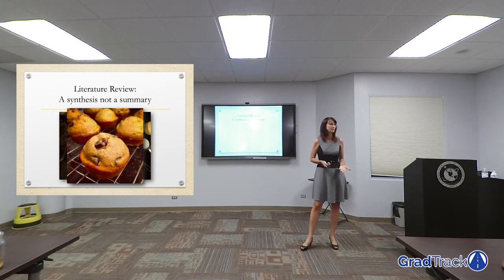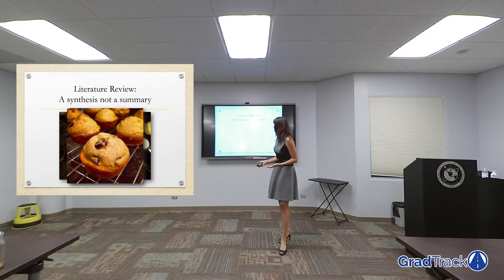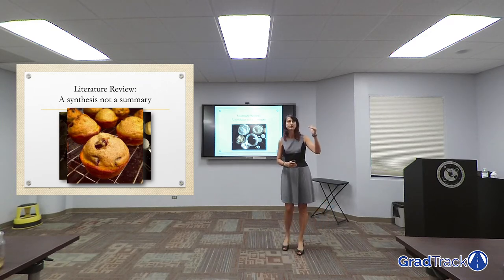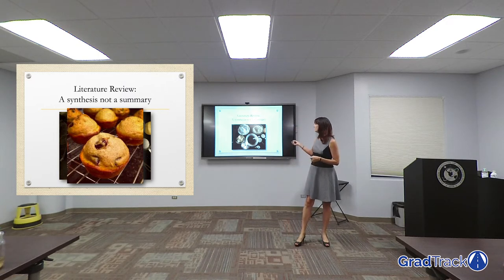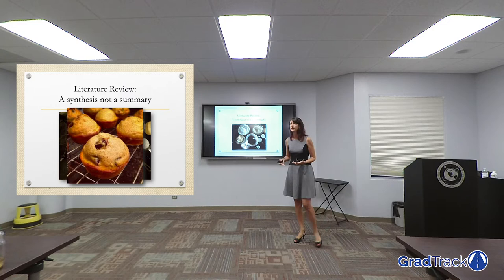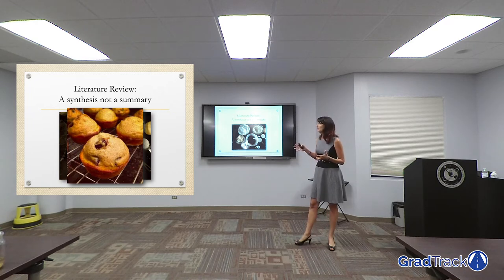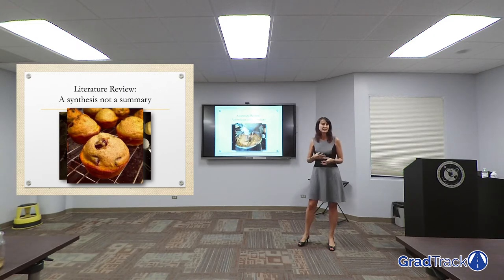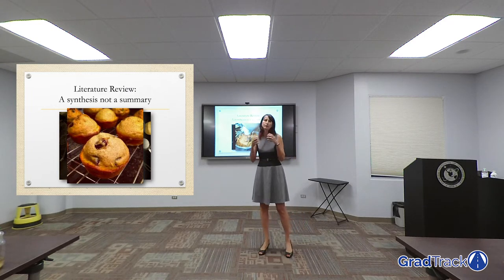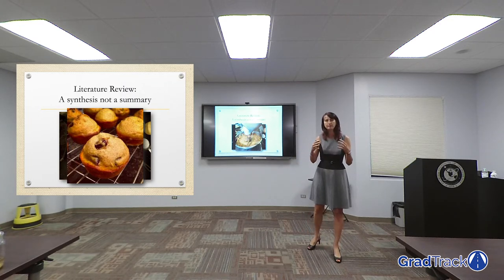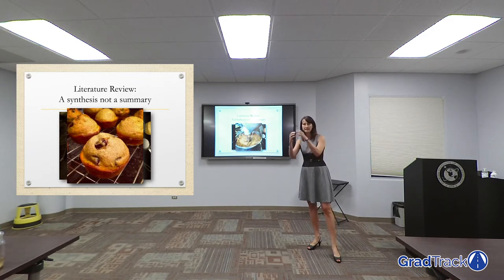If we think about a literature review like a recipe and like baking, we can have our ingredients. The literature that you have — your references — is your list of ingredients. But a list of ingredients is not creating a muffin. You've got to start putting those things together. The literature review, ultimately, is that mixing of things together, putting them together so that they are a cohesive form — and even though they're all different parts, they're making a statement that is clear.